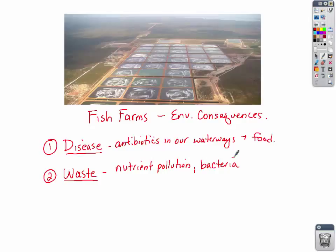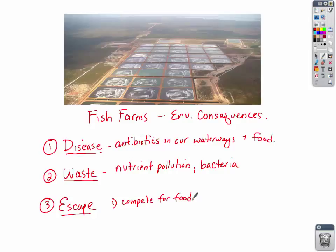The third environmental consequence of fish farms is one we don't really think about: escape. When a farm-raised species escapes, there are basically two problems. That fish can begin to compete for food sources with native species, and the ecosystem is now experiencing competition, leading to a decrease in population.